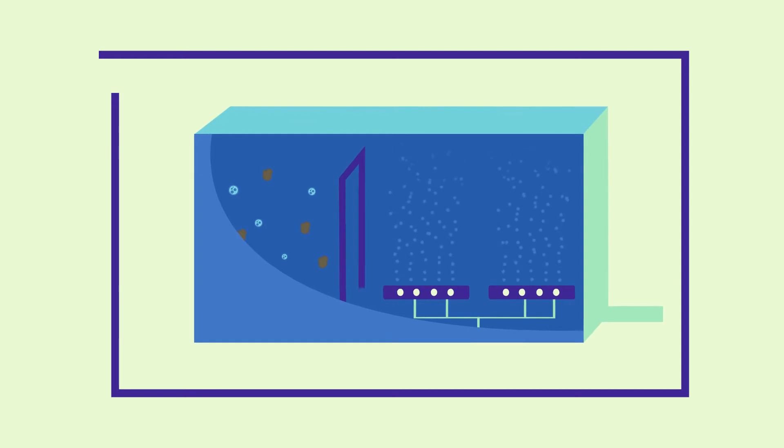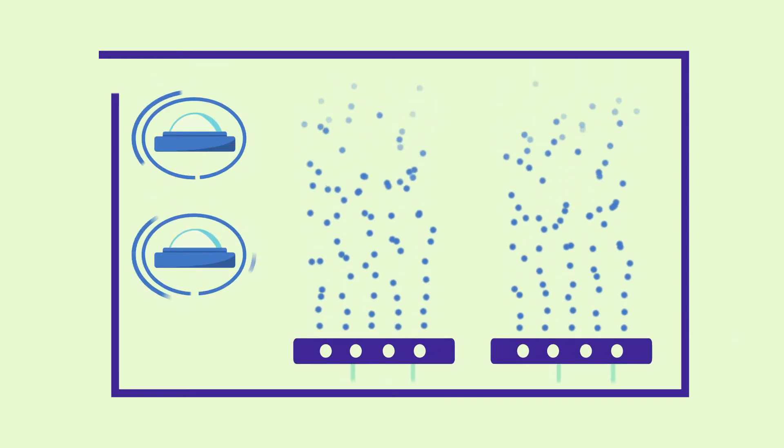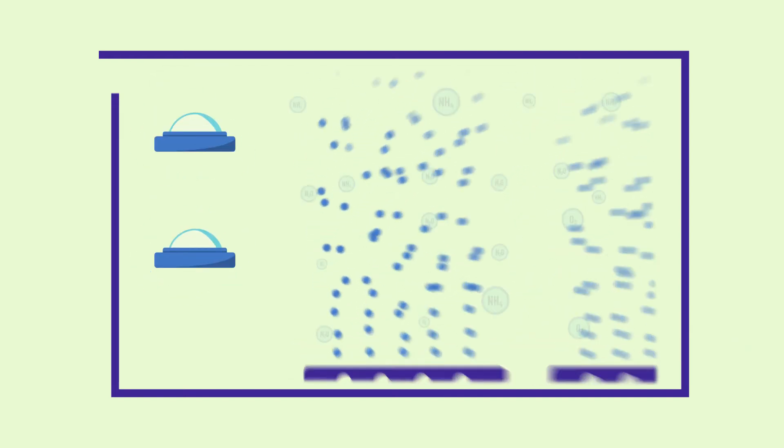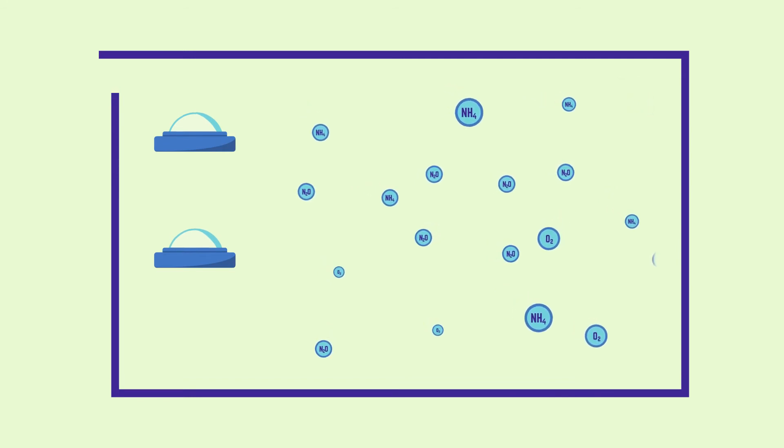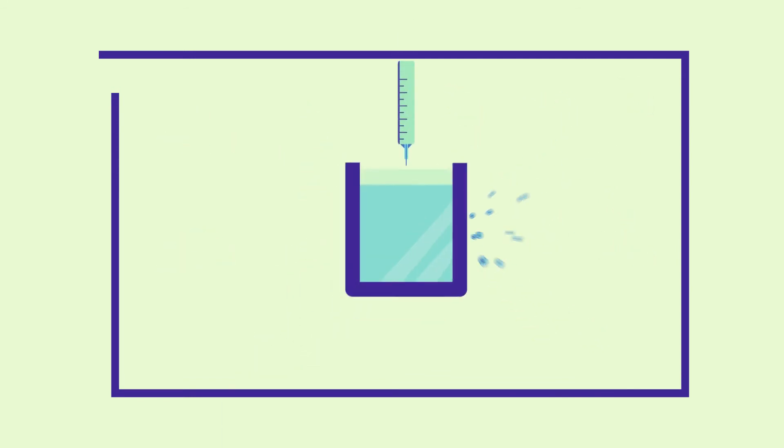This automation system is based on sensors that measure the nitrogen and oxygen species in the water and regulate the air flow rate in order to save energy and assure the water quality that comes out of the plant.